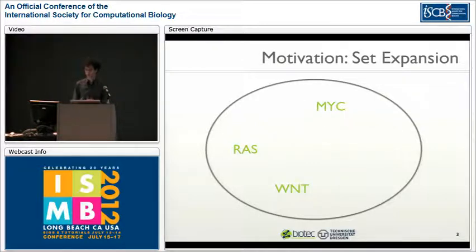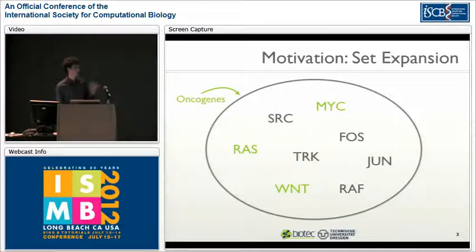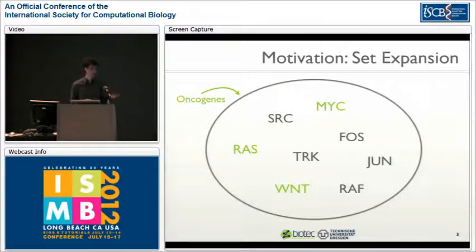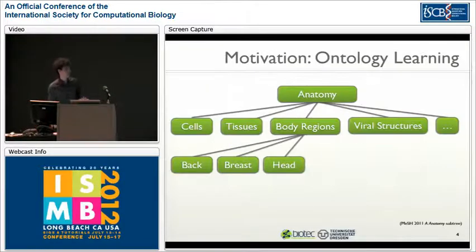Here's another example: three terms MIG, WAAS, and WIND. These are all oncogenes, and if you extend that set we get more oncogenes such as Jun, ORAF, or FOS.